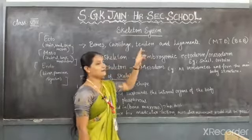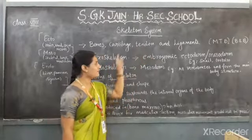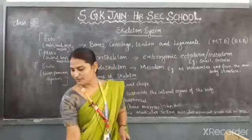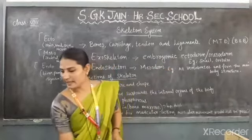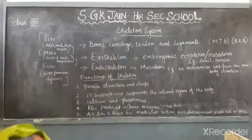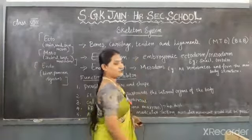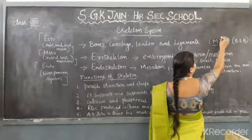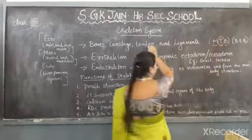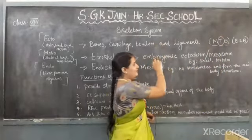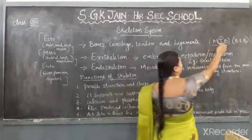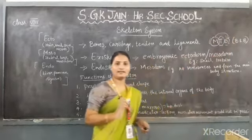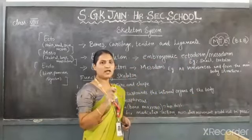A tendon is a fibrous cord-like structure which connects bone to muscle — that is the M, T, B relationship mentioned here. So tendon is a connective tissue which connects muscle to the bone.